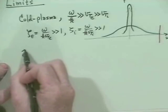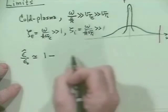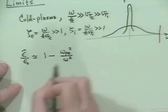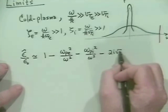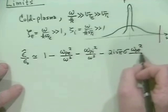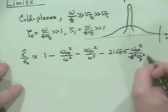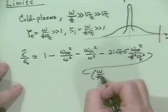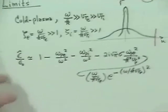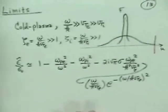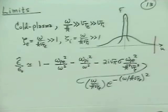Putting those two together and approximating the Z functions, epsilon hat over epsilon naught is approximately 1 minus omega_pe squared over omega squared, minus omega_pi squared over omega squared, plus 2i root pi sigma times omega_pe squared over k squared v_thermal_e squared times (omega over k v_thermal_e) times e to the minus (omega over k v_thermal_e) squared. This is just our electron plasma oscillation result — cold plasma with both electrons and ions in the fluid or asymptotic regime.